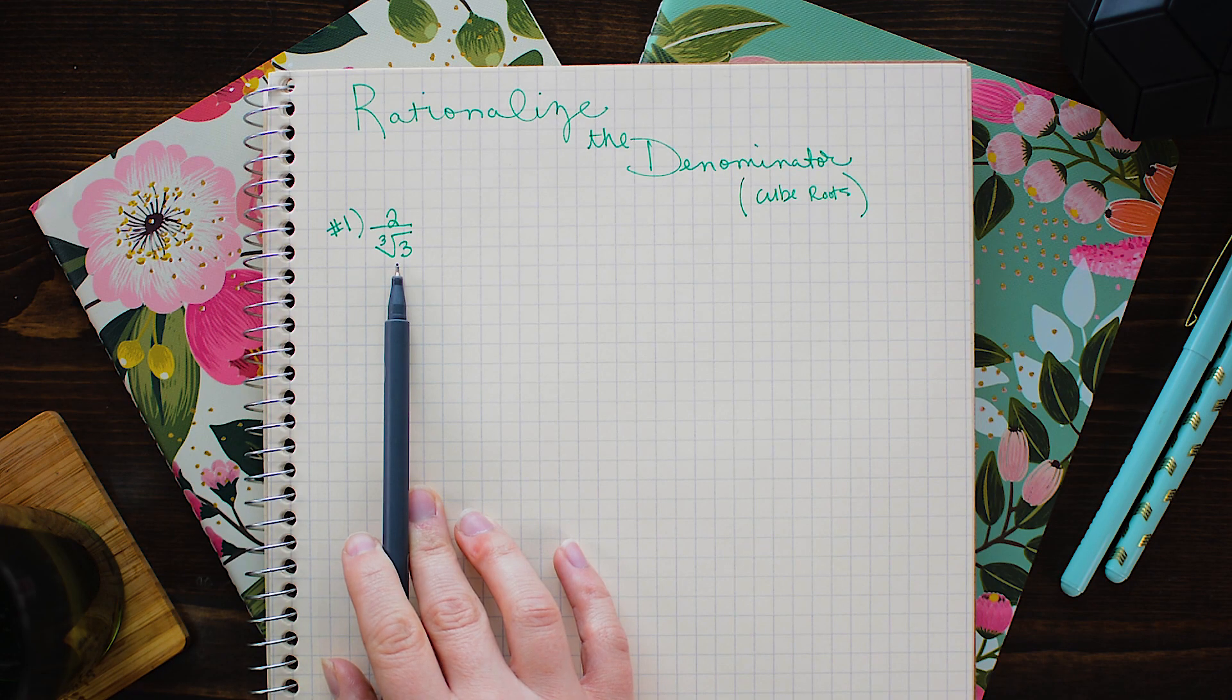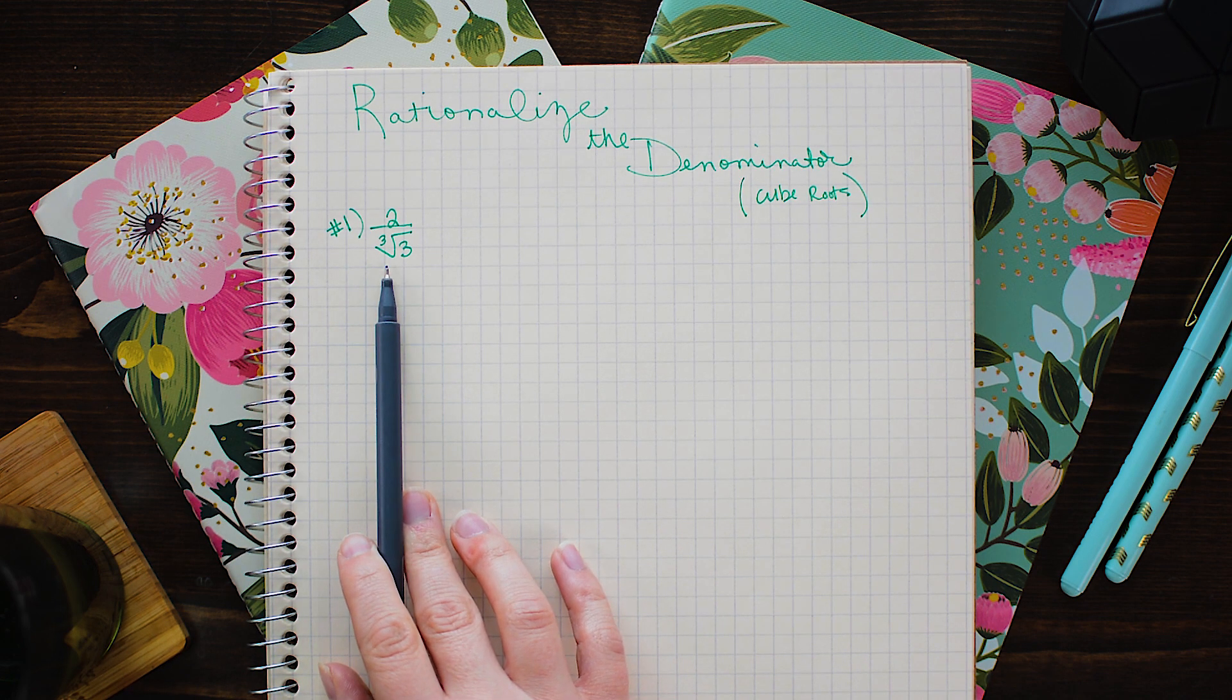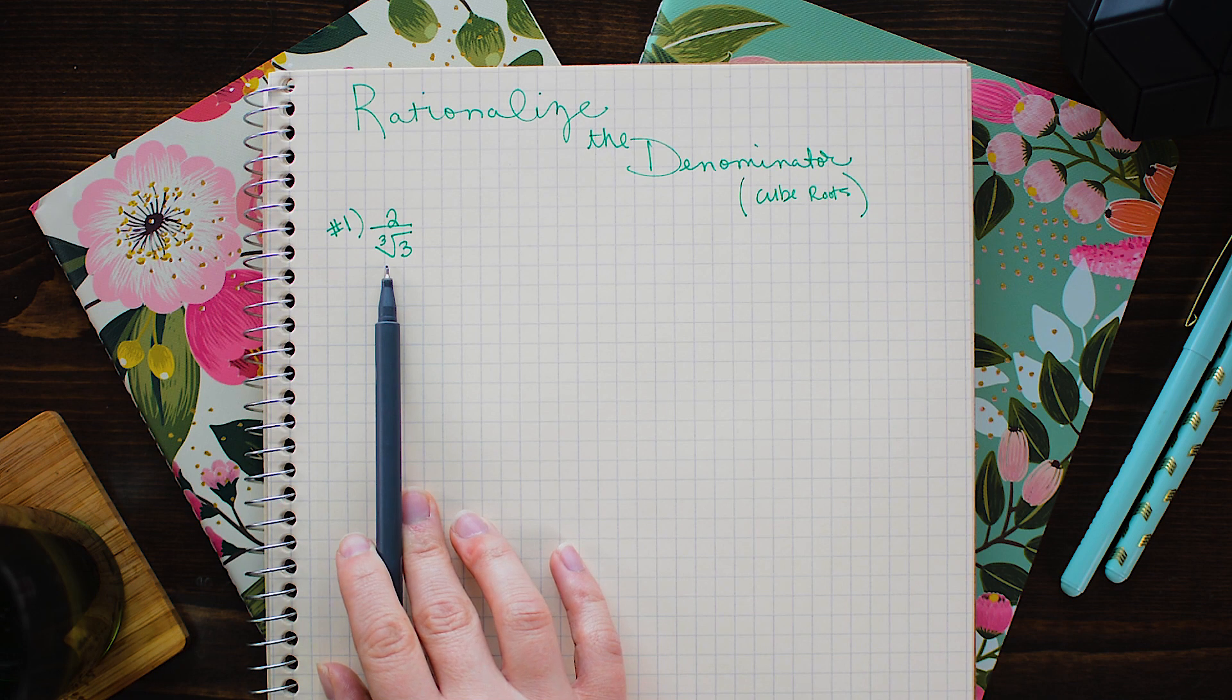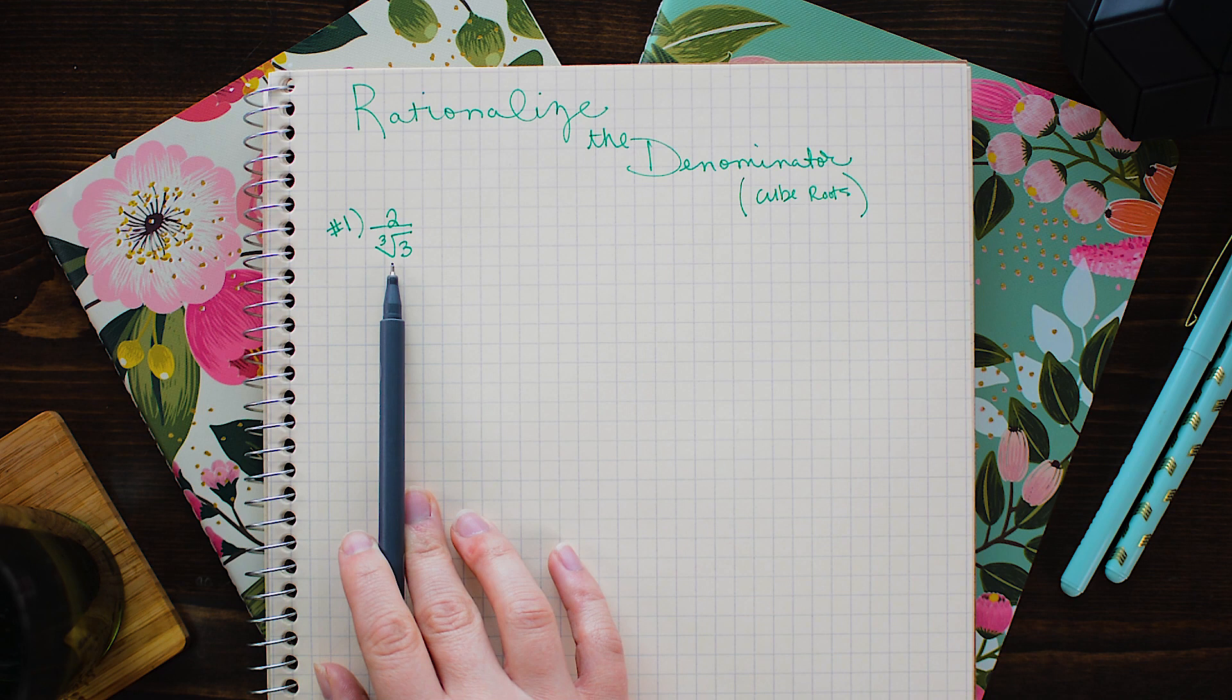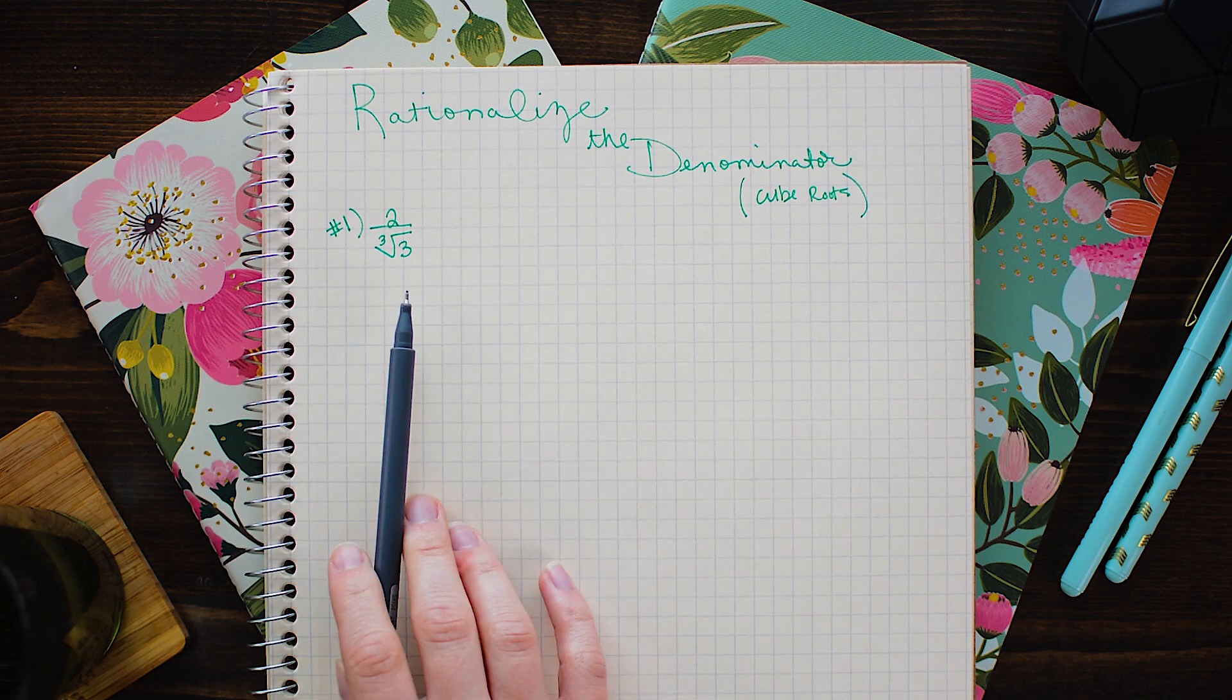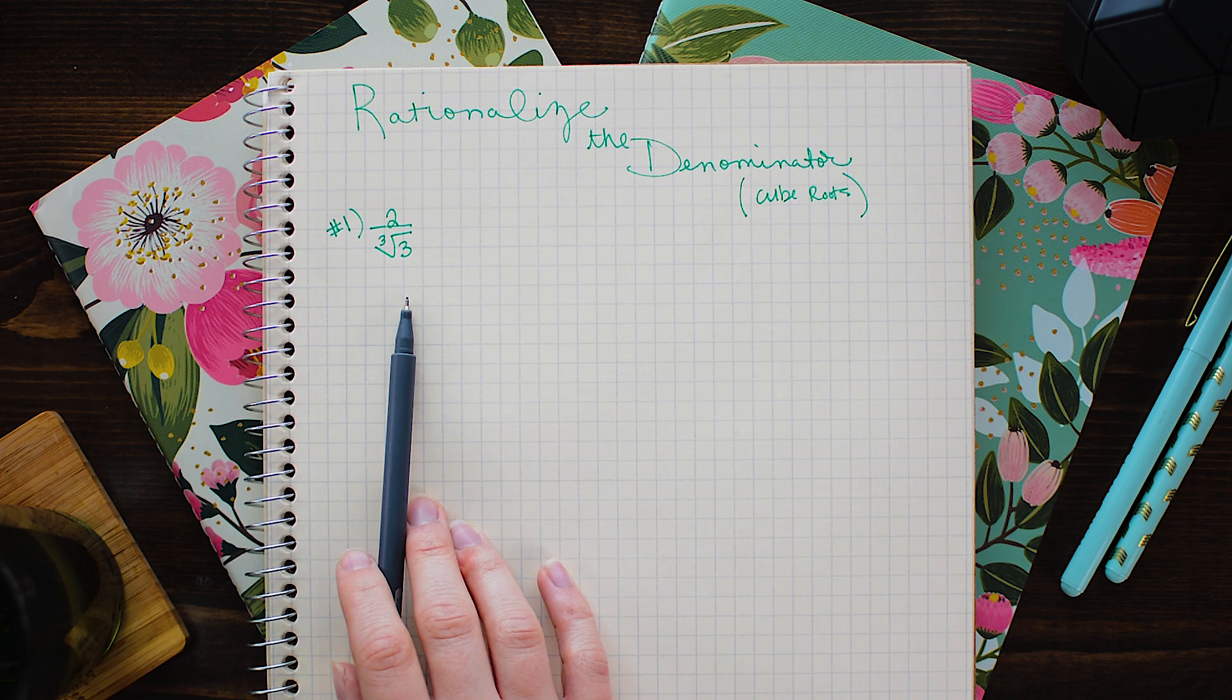You may recall that when we were trying to rationalize the denominator with square roots all we had to do was multiply by whatever square root we were trying to get rid of over itself. Now we can't quite do that with cube roots and let me just show you why.